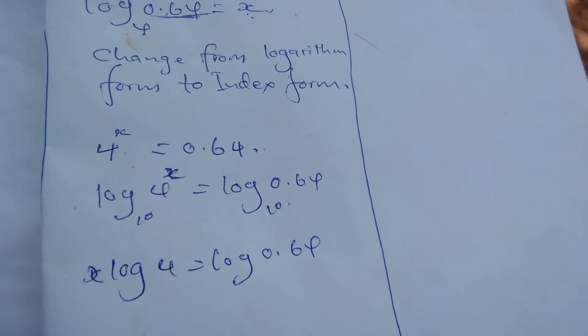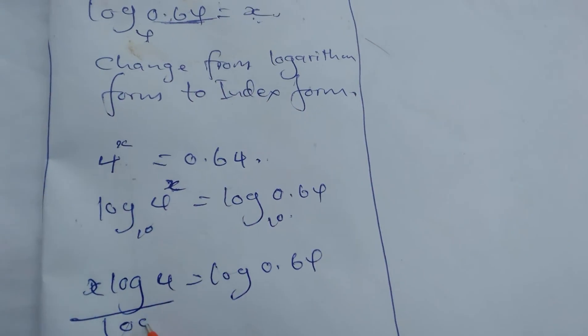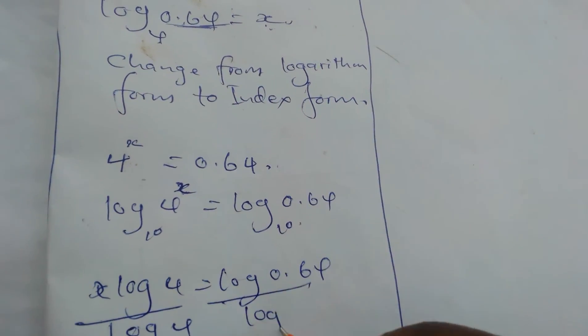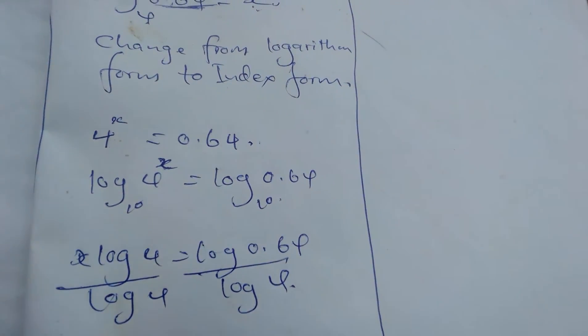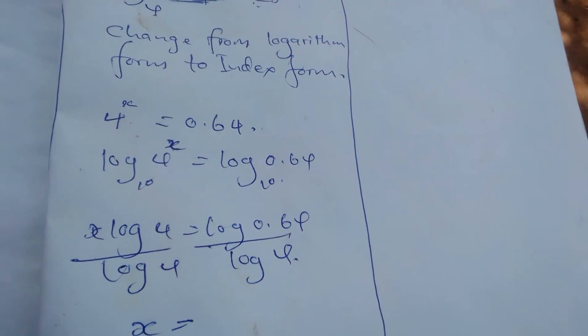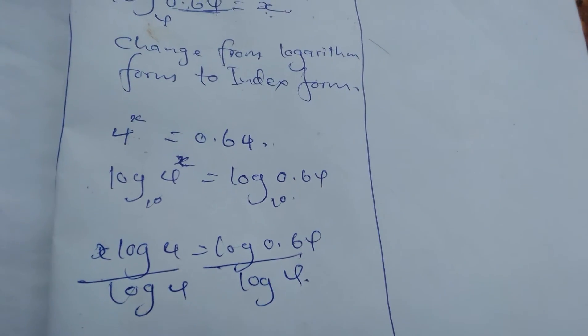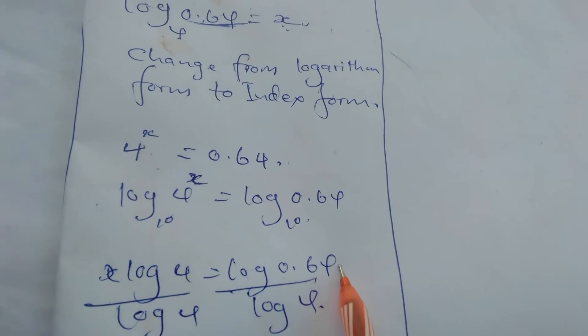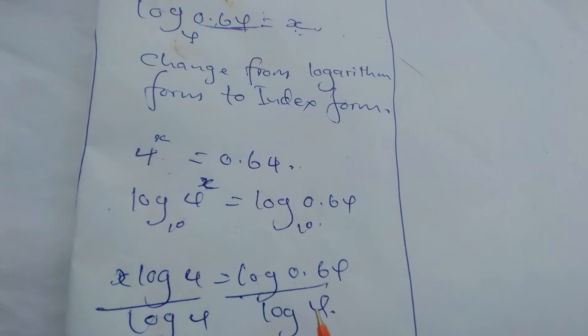Then at that point, you divide by log 4. You remain with x equals log 0.64 divided by log 4.